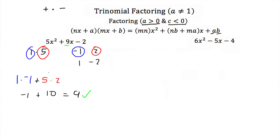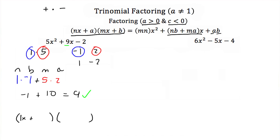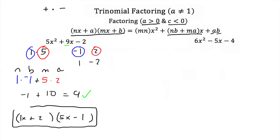So that means that our n is 1, our b is negative 1, our m is 5, and our a is 2. So if we plug those values into our factored form, we'll have 1x plus 2 times 5x minus 1, because our m is 5 and our b is negative 1. And our factored form of 5x squared plus 9x minus 2 is x plus 2 times 5x minus 1.